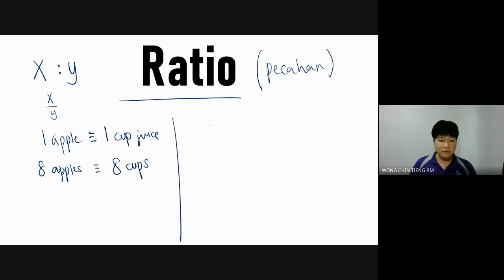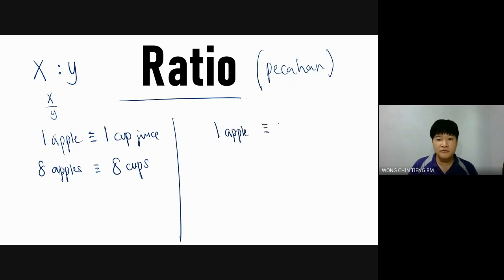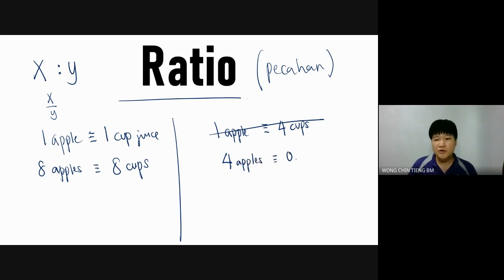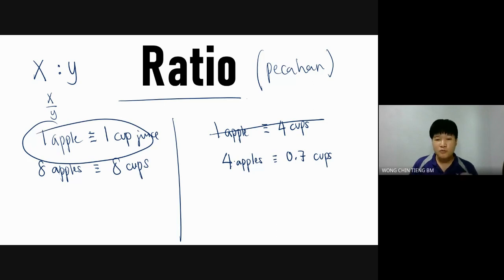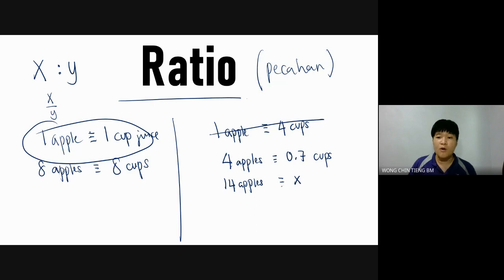But what happens if four apples only give you 0.7 cups of juice? That is the problem, because questions will never give you a one-to-one ratio. So if four apples gives 0.7 cups, how many cups do you get from 14 apples? That is the kind of question you will always encounter — X cups.